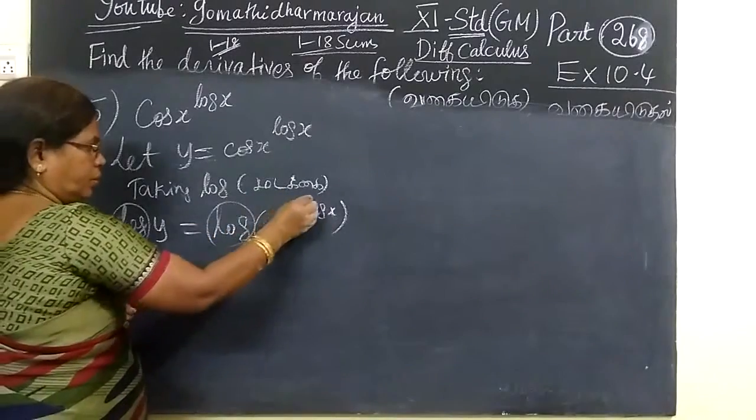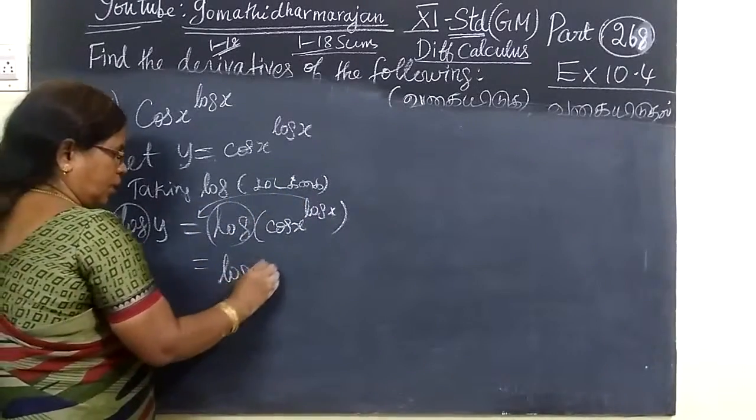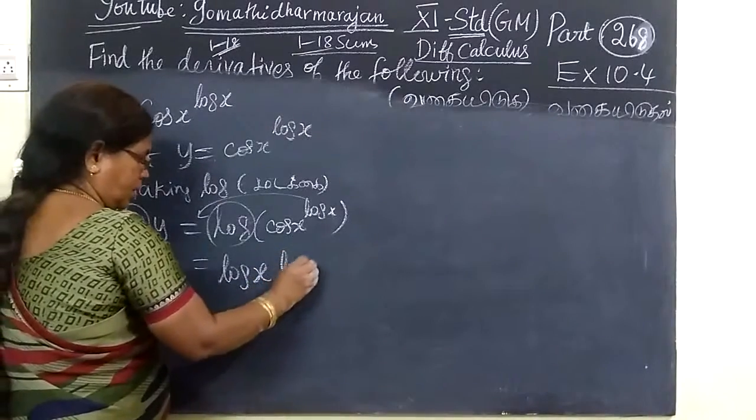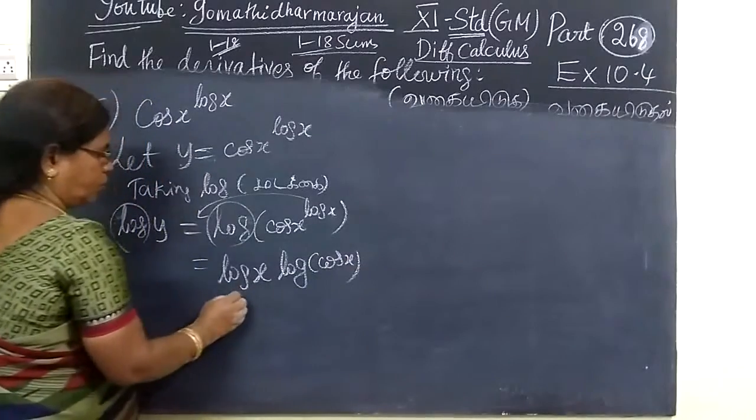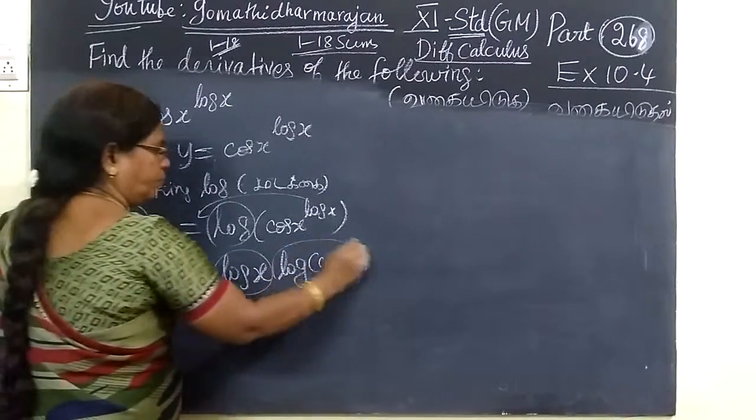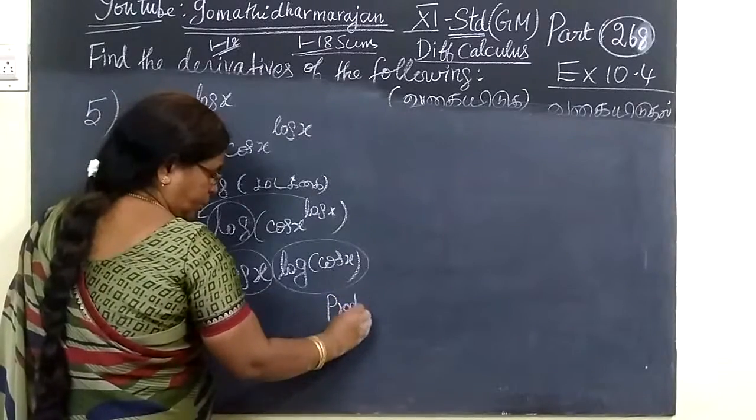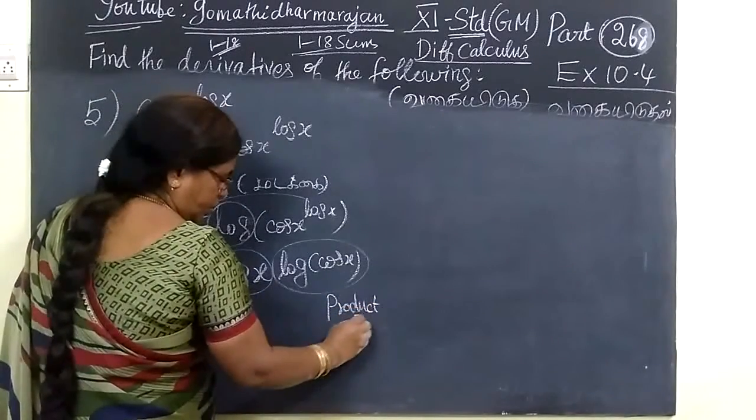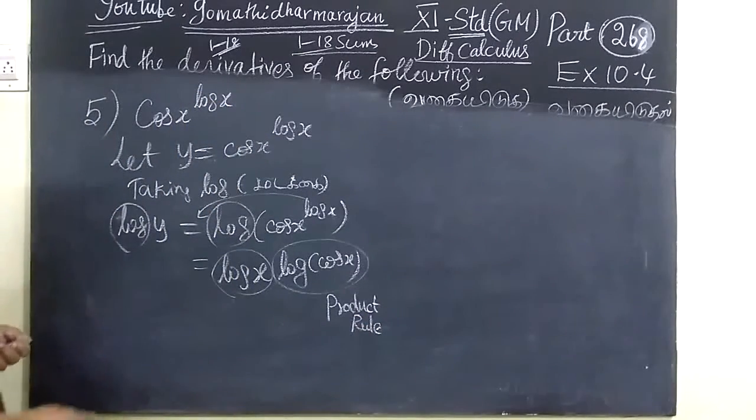Here you are writing one times log of cos x. This is a product of two terms. What rule do we apply? Product rule. U times V. UV method: UV dash plus VU dash.